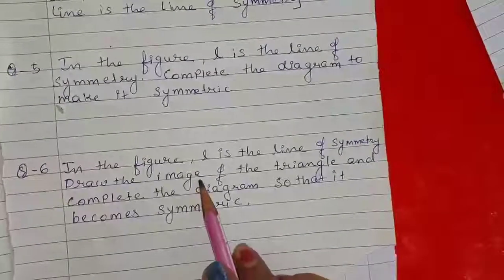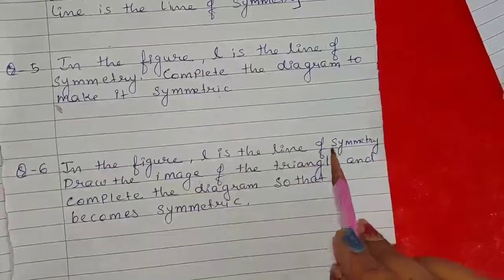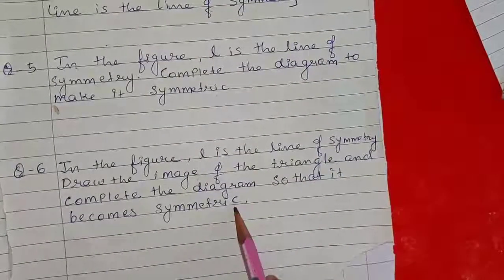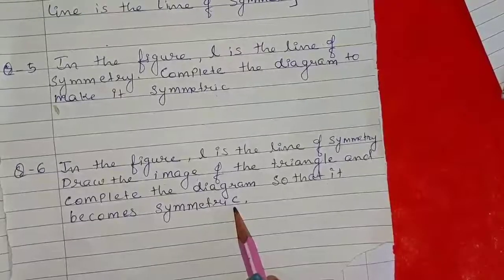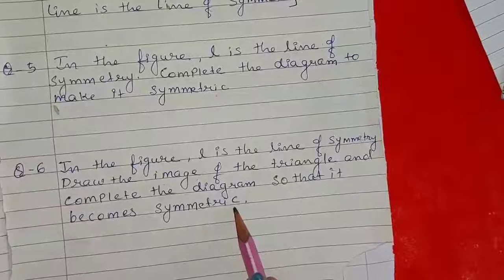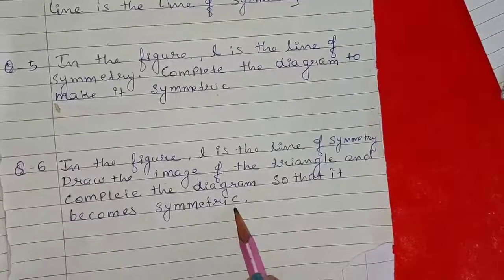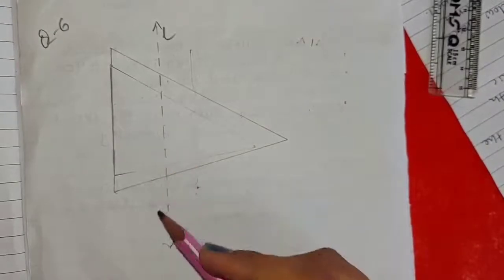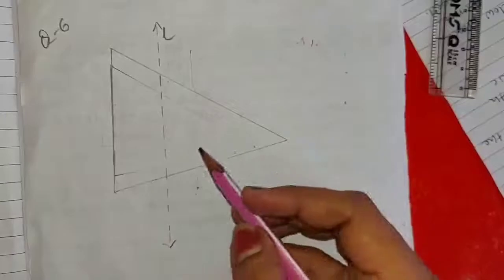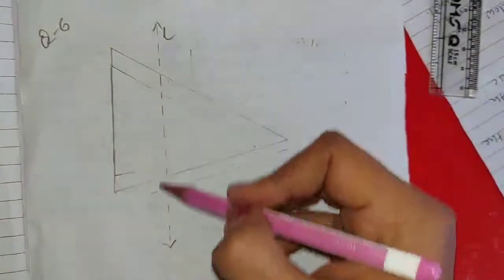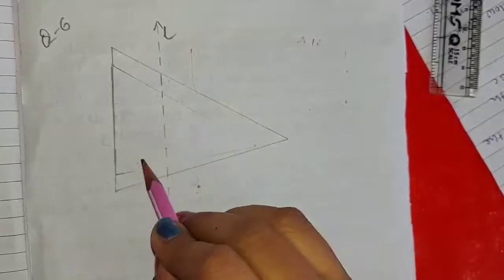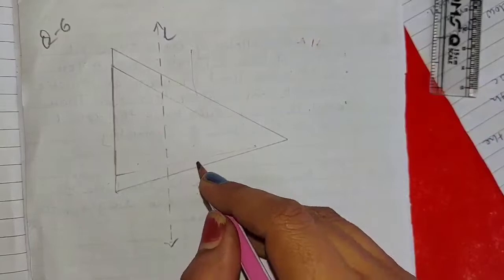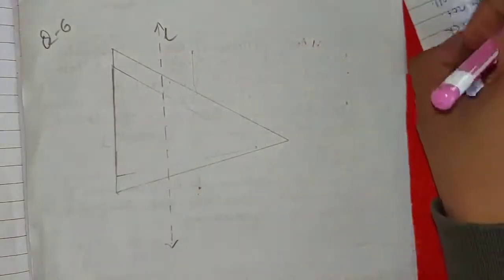Question number 6. In the figure, L is the line of symmetry. Draw the image of the triangle and complete the diagram so that it becomes symmetric. Here, L is the line of symmetry given, and we have to draw the image of the triangle. You can see this triangle is divided half-half from the line of symmetry.